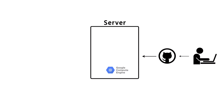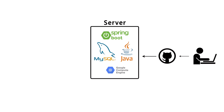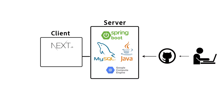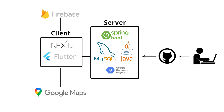Web servers are deployed to VMs on GCP and databases are managed using MySQL. RESTful APIs are implemented with Java and Spring Boot to respond to client requests. The client receives a response and uses Flutter and Next.js to display the view to the user. Firebase is used to implement Google social login, and the main view displays maps with Google Maps.